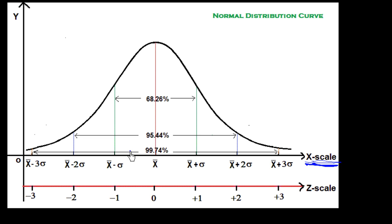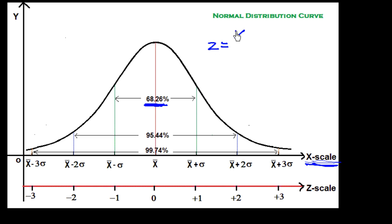The area between x-bar minus sigma and x-bar plus sigma is 68.26%. If we convert to the Z scale, x-bar equals 0. The conversion formula is Z = (X − x-bar) / sigma. Substituting x-bar for X gives (x-bar − x-bar) / sigma = 0 / sigma = 0, so the Z value at the mean is 0.